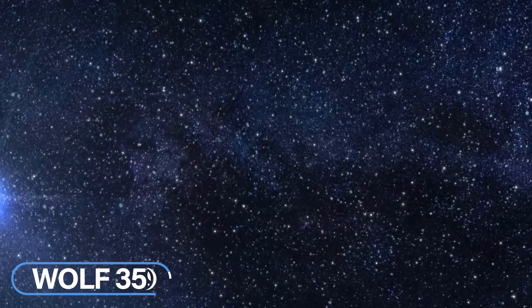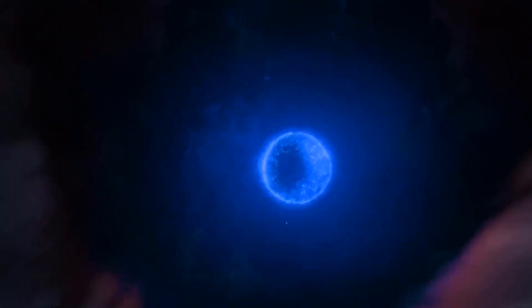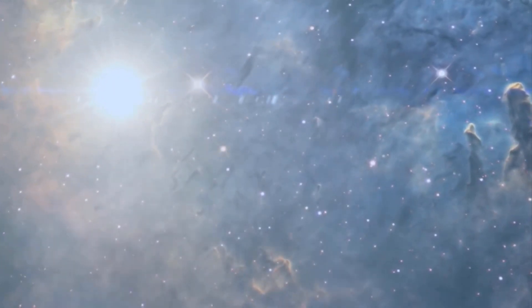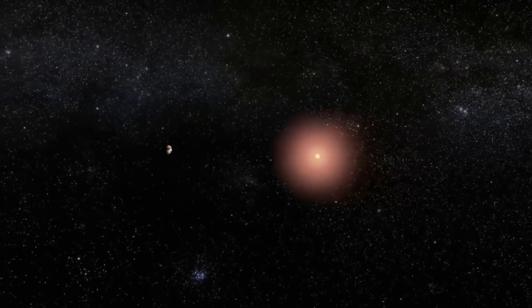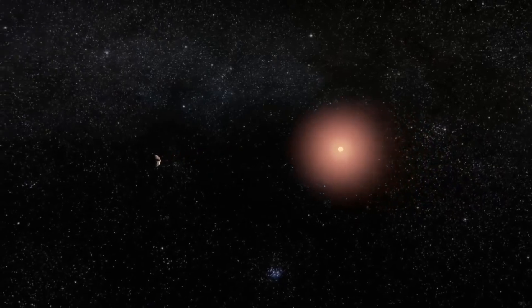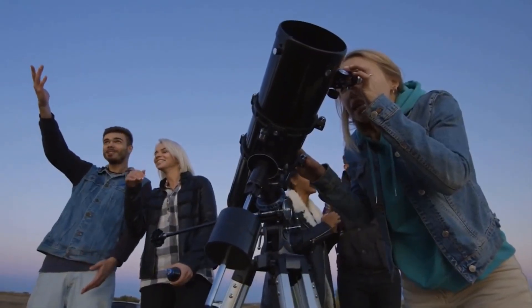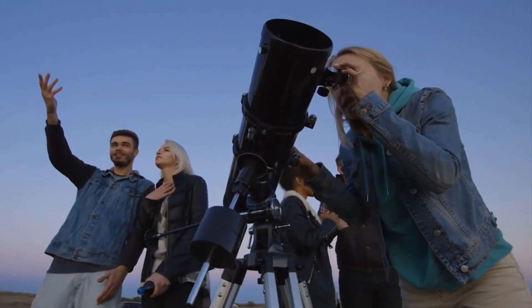Wolf 359. Found just 7.78 light years from Earth, Wolf 359 is a very dim star. Observers have to use telescopes for any hope of catching a glimpse of it. As it is a faint red dwarf, it is not visible to the naked eye and is located in the constellation of Leo. It is most famous for having a prominent role in some very famous sci-fi TV shows.